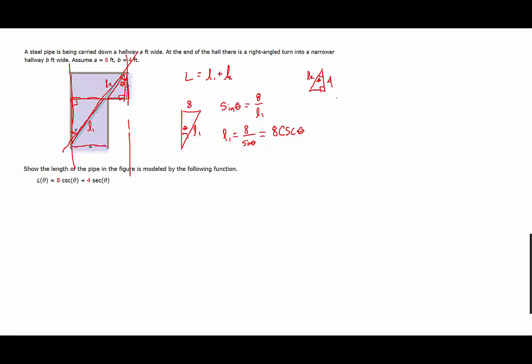So the cosine of theta here would be adjacent over hypotenuse. So 4 over L2. Now solving for L2, we would have L2 equals 4 divided by the cosine of theta.